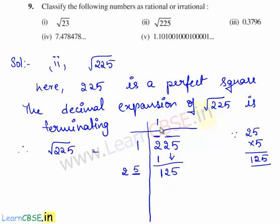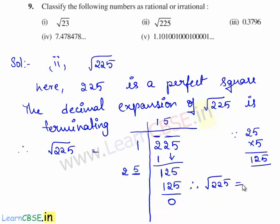Such a number is 5, since 25 × 5 = 125, which is exactly divisible. Therefore, the remainder is 0 and the long division stops here. Therefore, square root of 225 equals 15, where 15 is a rational number. Therefore, square root of 225 is also a rational number.